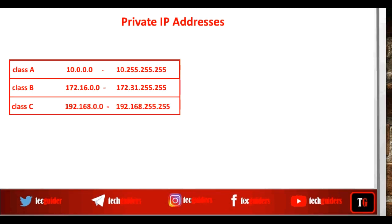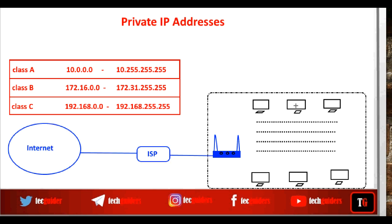Suppose we have an office network with 100 personal computers connected to a router. Instead of assigning a unique public IP address to each device within this company, the ISP assigns a single public IP address for the company — let it be 84.10.150.180. This router has an external interface and an internal interface. The address visible over the external interface is this public IP address, while all devices on the internal network are assigned private IP addresses.